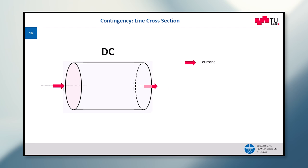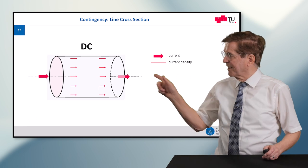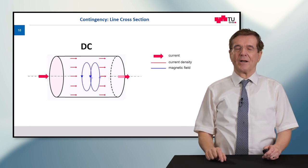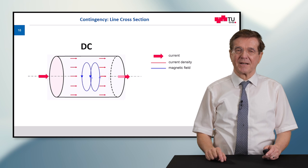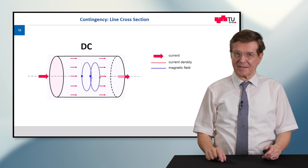Here you can see a DC current flow through a piece of cable. It enters, spreads into this current density which is uniform all across the cross-section and leaves the cable at the other side. While it does so it generates some magnetic field around this current and that's it.